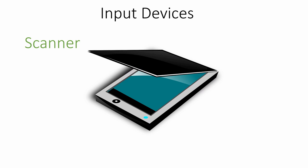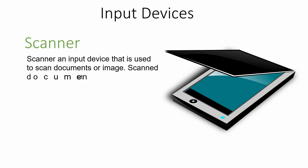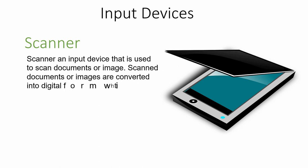Similarly, a scanner is another input device of our computer system that helps to scan documents or images. The scanned documents or images are converted into digital form that can be edited and modified in our computer system according to our need. The scanner converts printed documents or pictures into digital form.